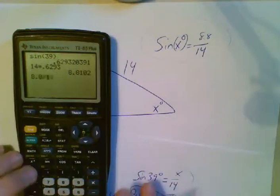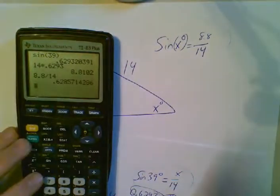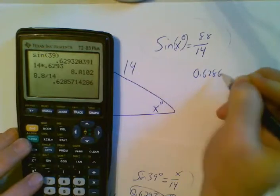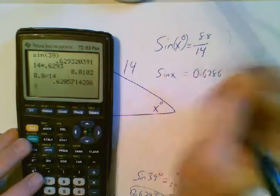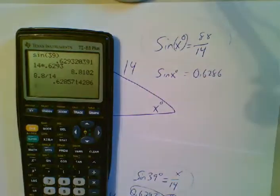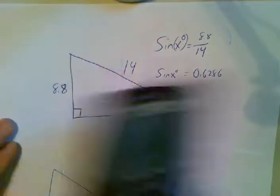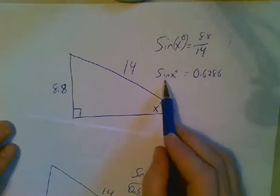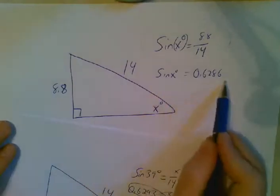Let's at least get that part out of the way. 8.8 divided by 14 is 0.6286. So sine of x equals 0.6286, and I want to solve for x.